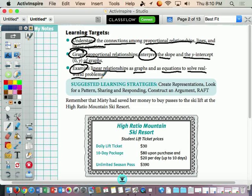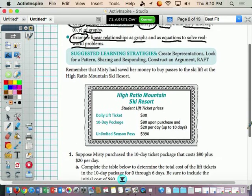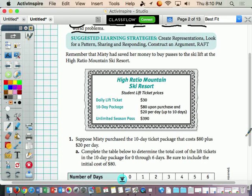So we're going back to Misty because for some reason our book really likes Misty. Misty, if you remember, is the skier. She skis or she wants to ski, and she's raising money to ski by doing chores, I think. So it says, remember that Misty had saved her money by passing to the ski lift at the High Ratio Mountain Ski Resort. Day lift ticket, $30. 10-day package, $80 upon purchase, $20 per day up to 10 days. And unlimited season pass, $390.